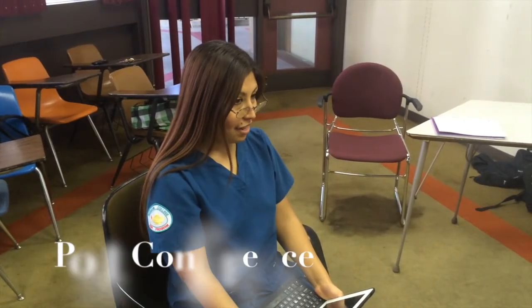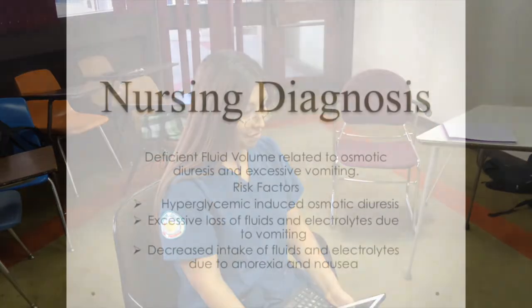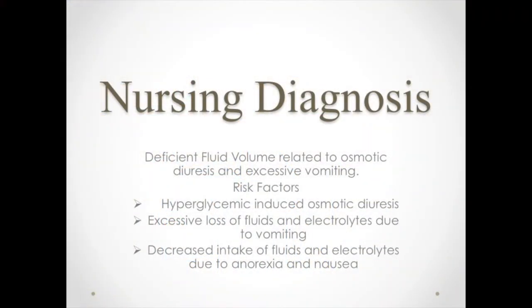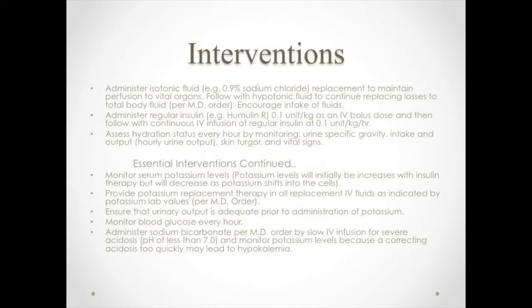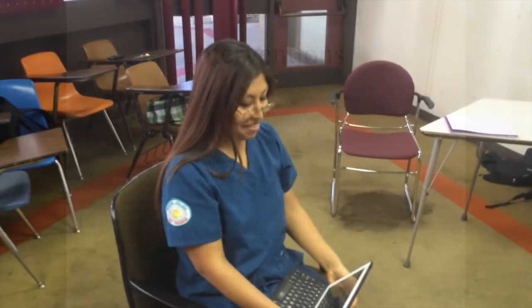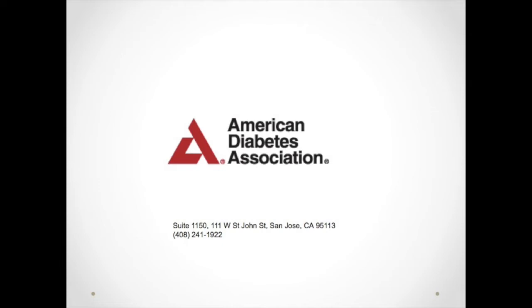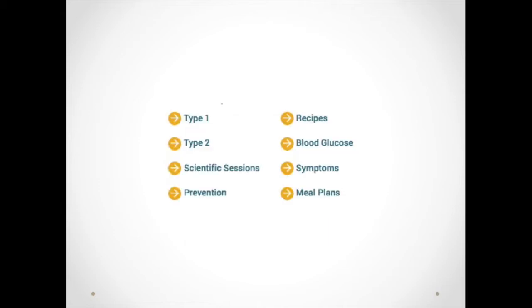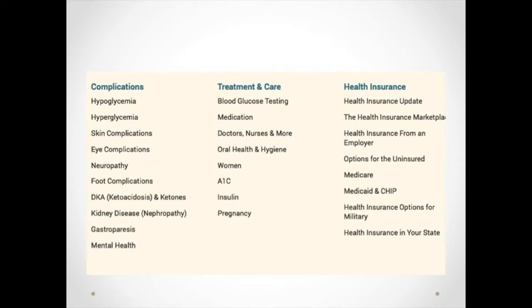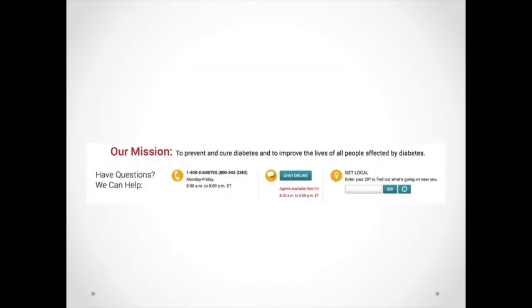So what are your NANDA diagnoses and what are your nursing interventions? Sounds good. What is your community resource for DKA? Our local resource is the American Diabetes Association, located at 111 West St. John Street, San Jose, California 95113. At this resource you will find more information about diabetes, its complications, treatment and care, and health insurance. Online, you can talk to a healthcare professional or chat more about diabetes, its complications, and care.